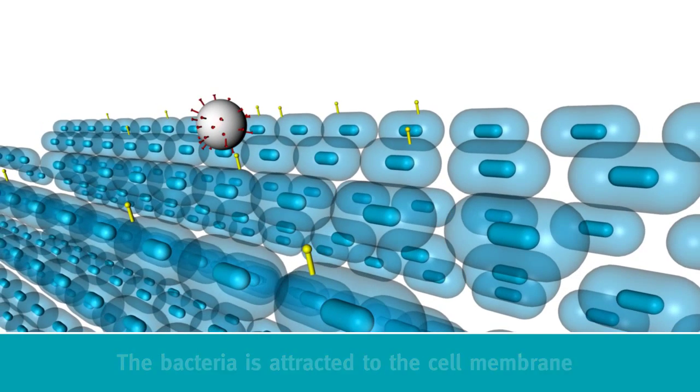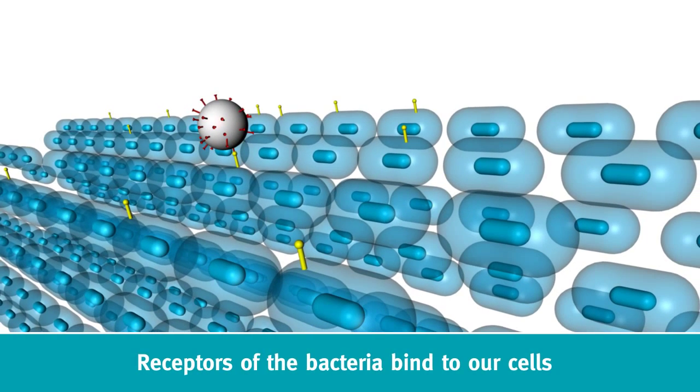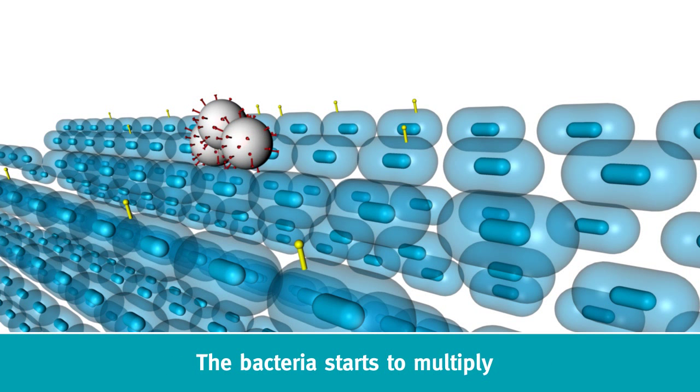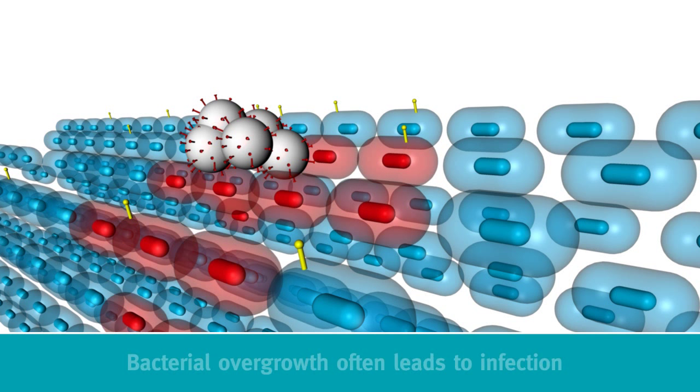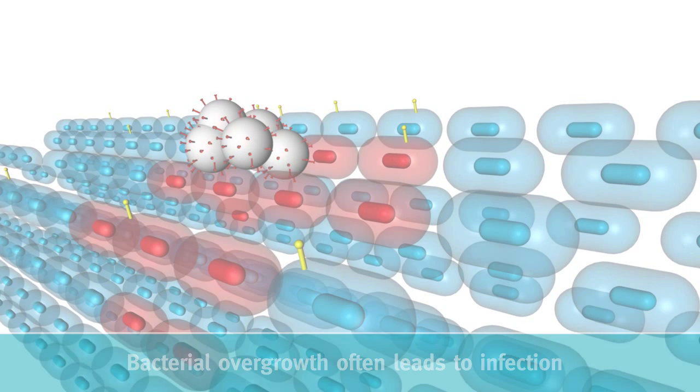But the harmful microbe can bind to our cells, and when it binds it can become bad and will start to multiply. This is the first phase of bacterial overgrowth. Bacterial overgrowth can lead to many different problems and to infection.